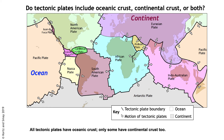So tectonic plates are made of oceanic crust, and some of them are made of both oceanic and continental crust. There is no example on Earth today of a plate made of only continental crust — it's possible, but the way plates move away from each other makes it extremely unlikely to exist for a long period of time.